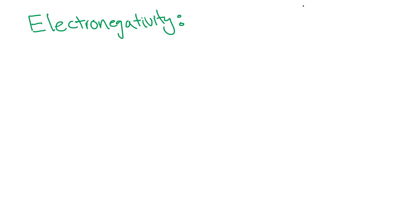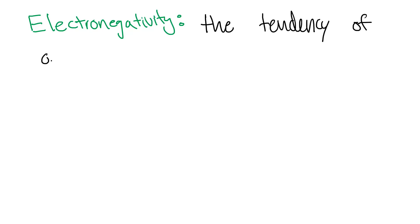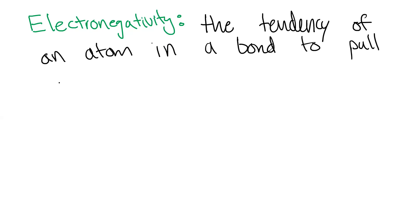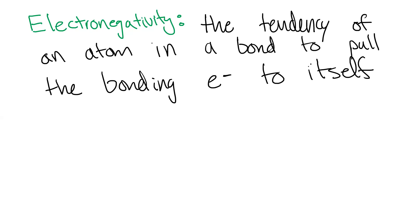These extensions of the definition do work, but they need to be returned to the original definition: the tendency of an atom in a bond to pull the bonding electrons to itself is really what the definition of electronegativity is about. It's about a bonded atom pulling the electrons in that bond towards itself — this involves bonds and an atom pulling on electrons.